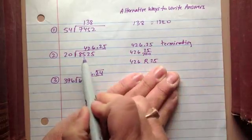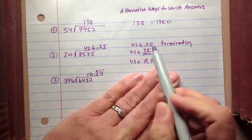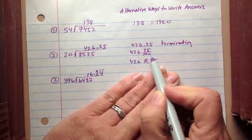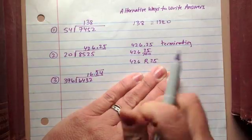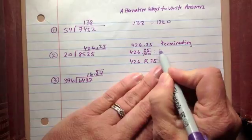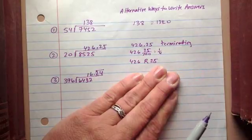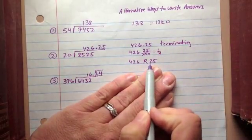So 426.25 is a terminating decimal. That's one way to write our answer for this division problem. Another way sometimes you might need to write the answer is in fraction form. So if you did have to do that, you would write 426 and 25 one hundredths, or this could be one-fourth. And then another way, sometimes you're just asked, what's the remainder?